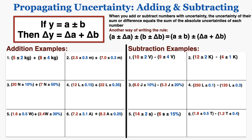When you're adding or subtracting numbers with uncertainty, the uncertainty of their sum or difference equals the sum of the absolute uncertainties of each individual number. So if the sum or difference y is equal to a plus or minus b, the uncertainty of y is equal to the sum of the absolute uncertainties of the two numbers. If you don't know what I mean by absolute uncertainty specifically, you should go back and watch my lecture on absolute, fractional, and percent uncertainty linked in the description.